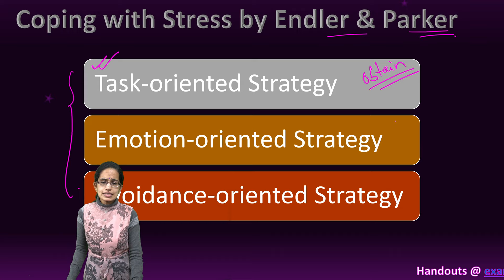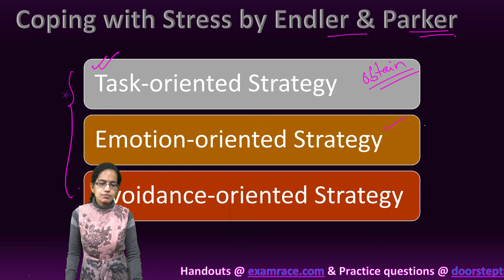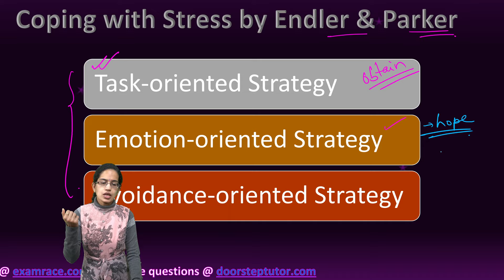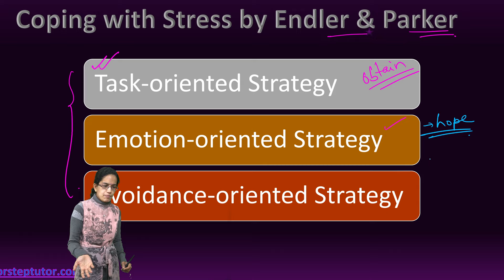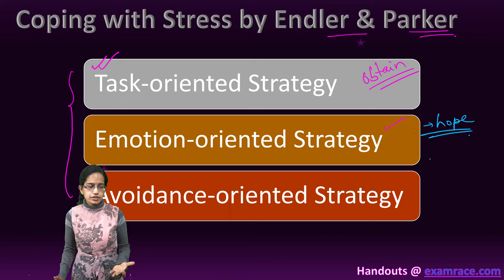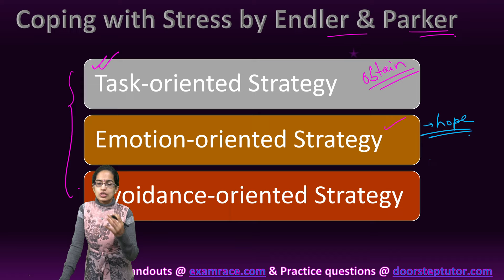The next is the emotion-oriented strategy, which says you must maintain hope, keep your hope high, try to control your emotions, control your anger and frustration, and not worry about what happens next. Think in a positive direction and say, 'I am definitely going to get out of this situation.' That is an emotion-oriented strategy.